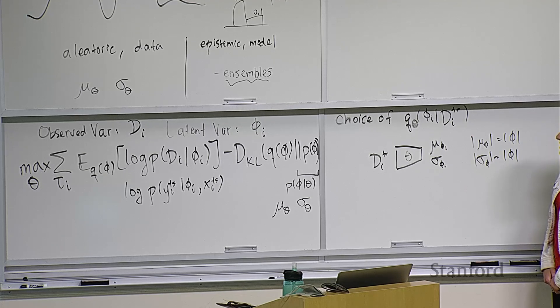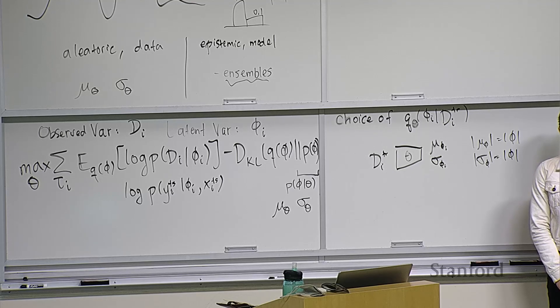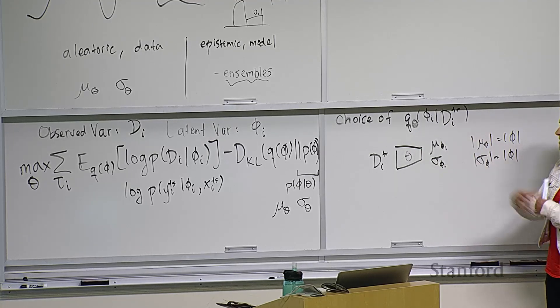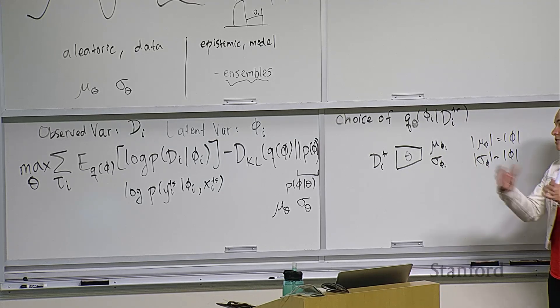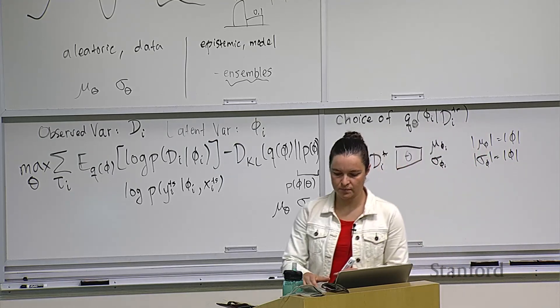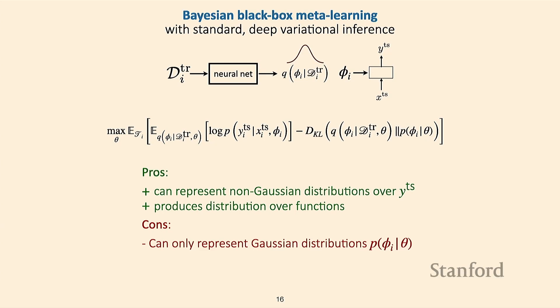Unlike in variational autoencoders where you throw away Q, in this case you'll actually use Q at test time — if you want to infer a distribution of task-specific parameters, Q is doing exactly that. The inner loop process at test time first uses Q to get phi, then uses P to get a distribution over labels. One downside: you can only represent Gaussian distributions over phi, because the reparameterization trick and KL divergence are primarily applicable to Gaussian distributions. However, with a large enough deep neural network, Gaussian weight samples can be transformed into something fairly complex.